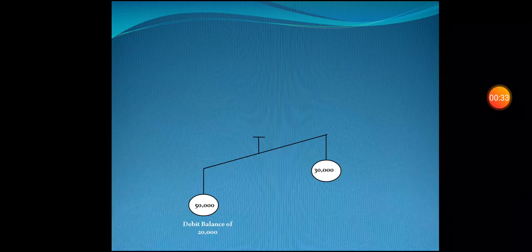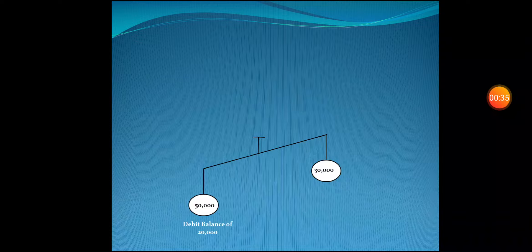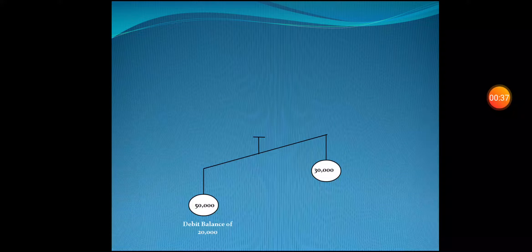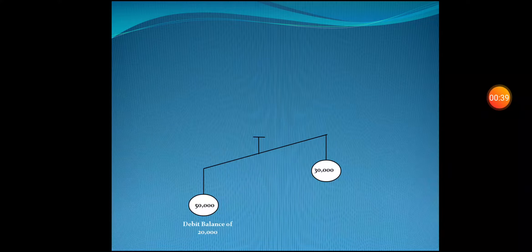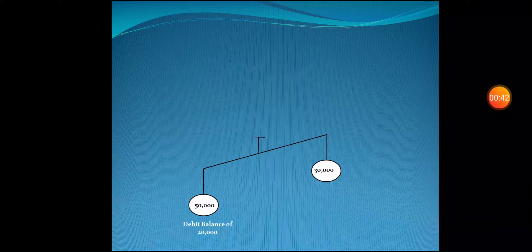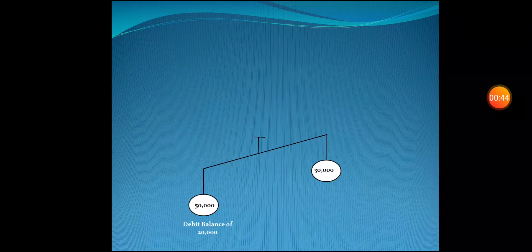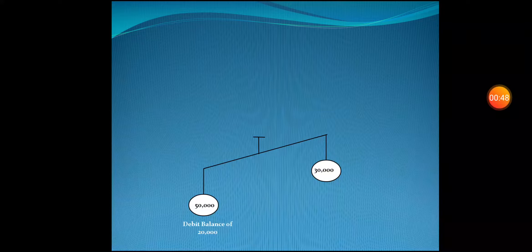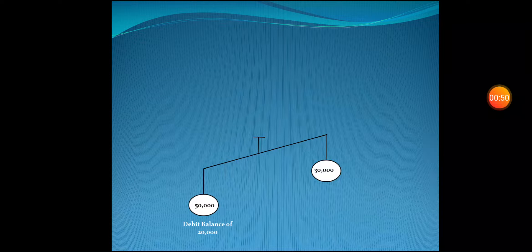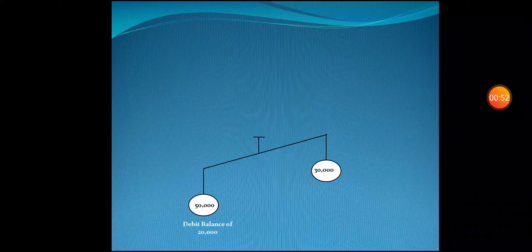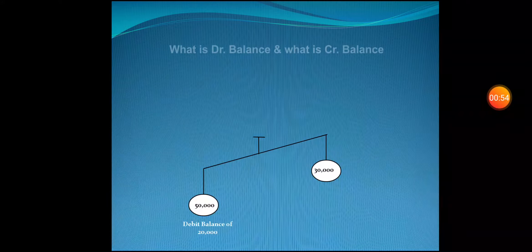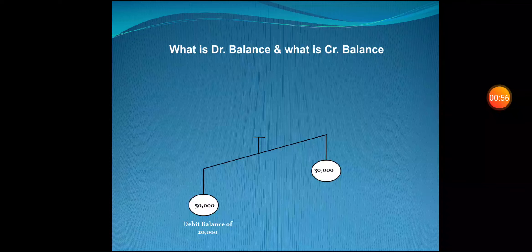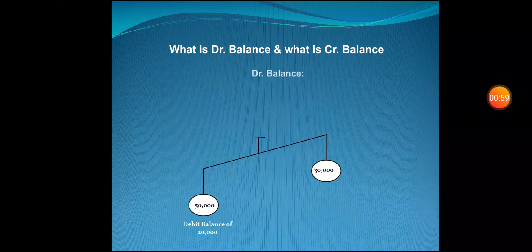Here in this figure of balance, you can see on the left-hand side we have written 50,000. On the right-hand side, that is on the credit side, we have written 30,000. If debit side total is more than its credit side total, then we can say there is a debit balance.